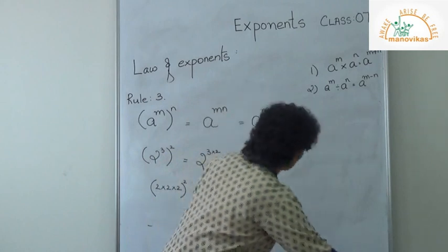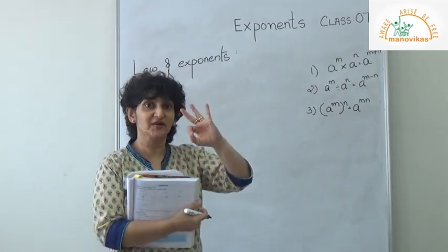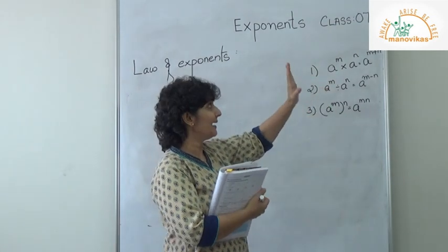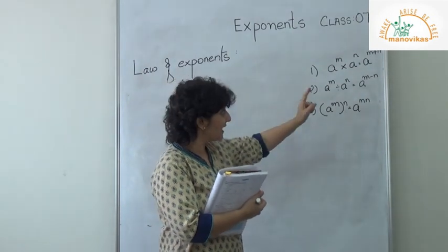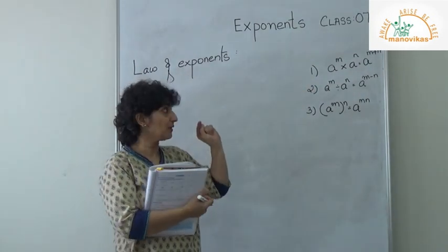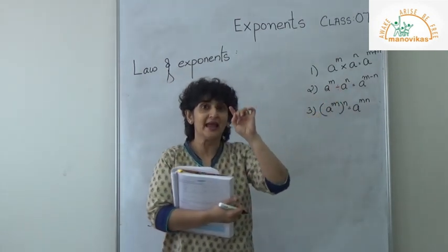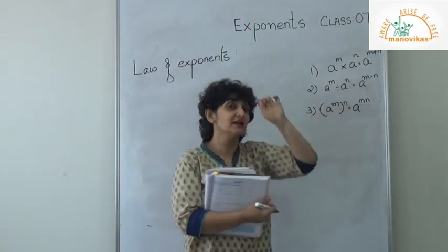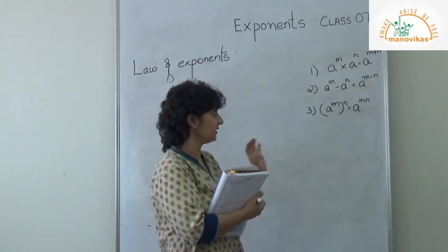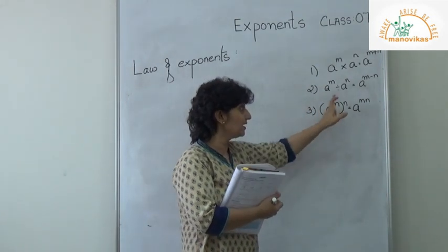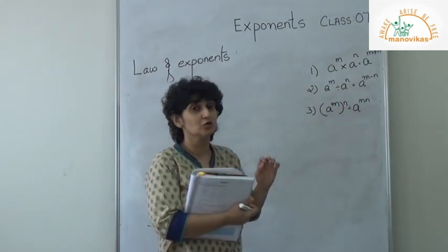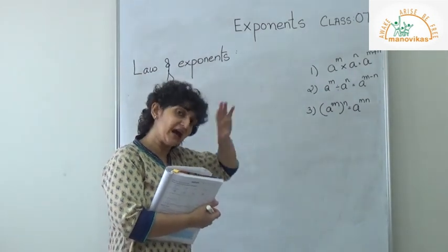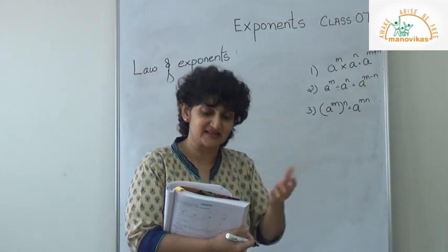Now let's move on. We did 3 rules. First: a to the power m into a to the power n equals a to the power m plus n. Second: a to the power m divided by a to the power n equals a to the power m minus n — and if n is bigger, it becomes 1 upon your answer. Third: a to the power m, the whole to the power n, equals a to the power m times n. For today I'll stop with these 3 rules and do the other 2 in the next session.